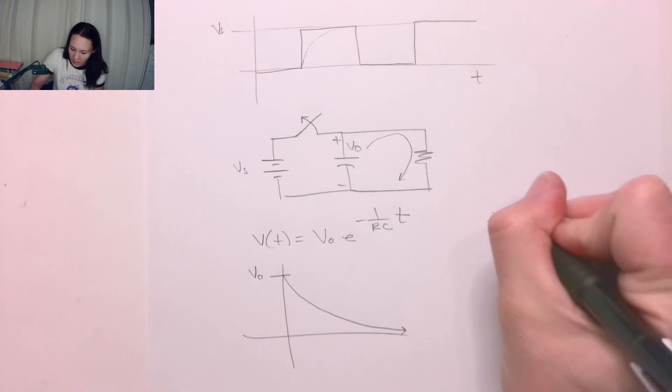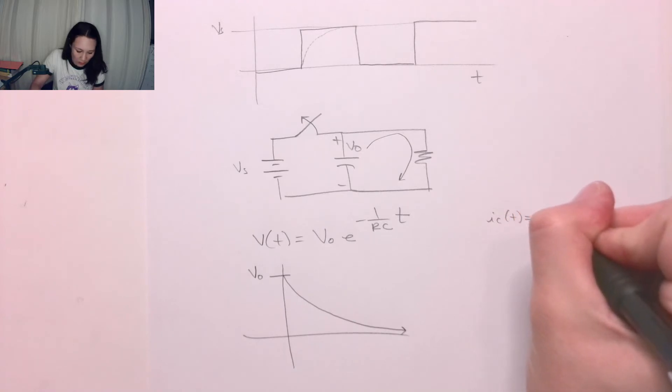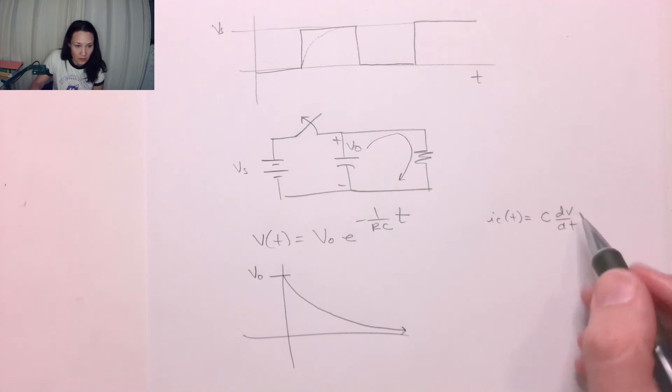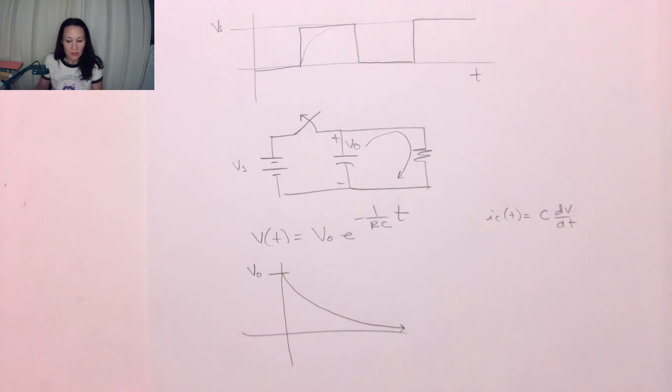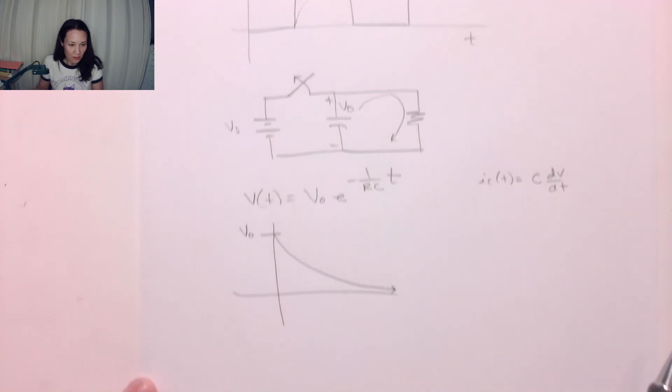Or you can take the derivative where, if you recall, ic(t), the current through the capacitor, is given by C dV/dt, where V is your equation here. This is the natural response of the RC circuit.